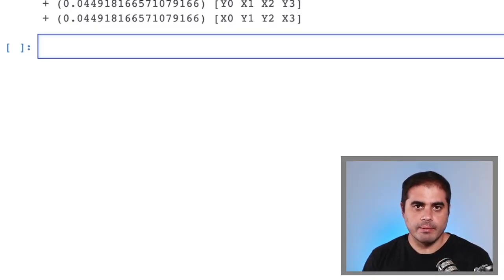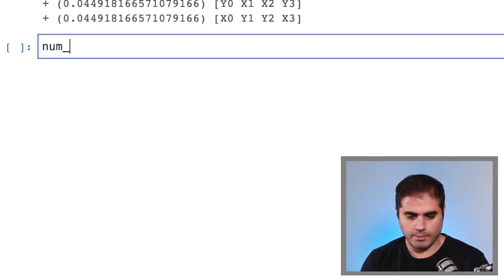So now as an example, let's build a quantum circuit that calculates the expectation value of the energy for an electronic state in the Jordan-Wigner representation. So to do this, let's define the number of wires that our circuit will take, which will be num_wires, which is just the number of qubits that we have in our Hamiltonian.